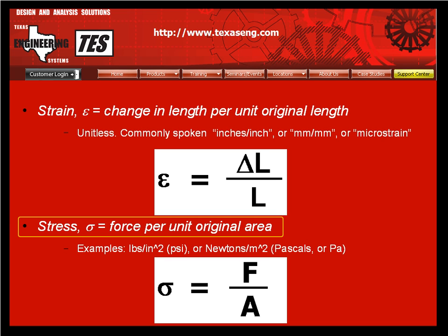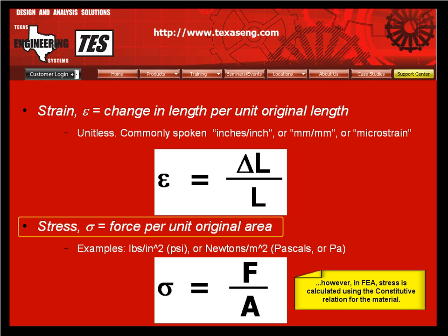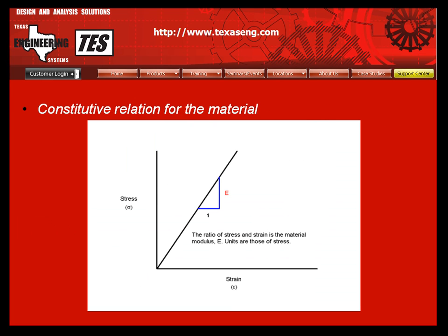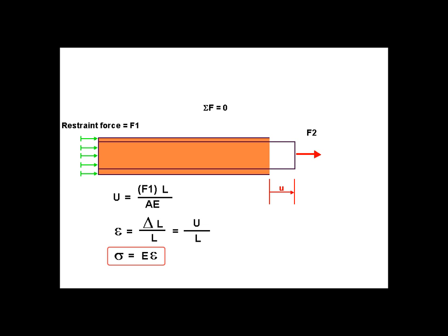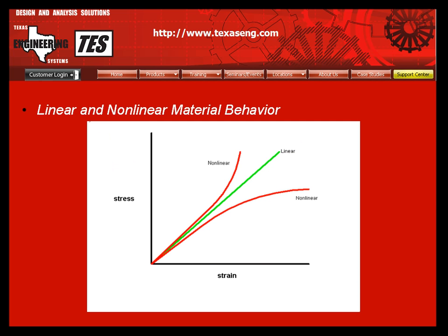Next the stress is calculated. Recall the stress is defined as the force per unit area and has units of psi or pascals. However in FEA the stress is calculated using the constitutive relation for the material. Here we see a linear relationship between the stress and the strain. If the material is stressed twice as far, the strain will be twice as much. The constant of proportionality is the material modulus or Young's modulus, big E. The stress is equal to the material modulus times the strain.